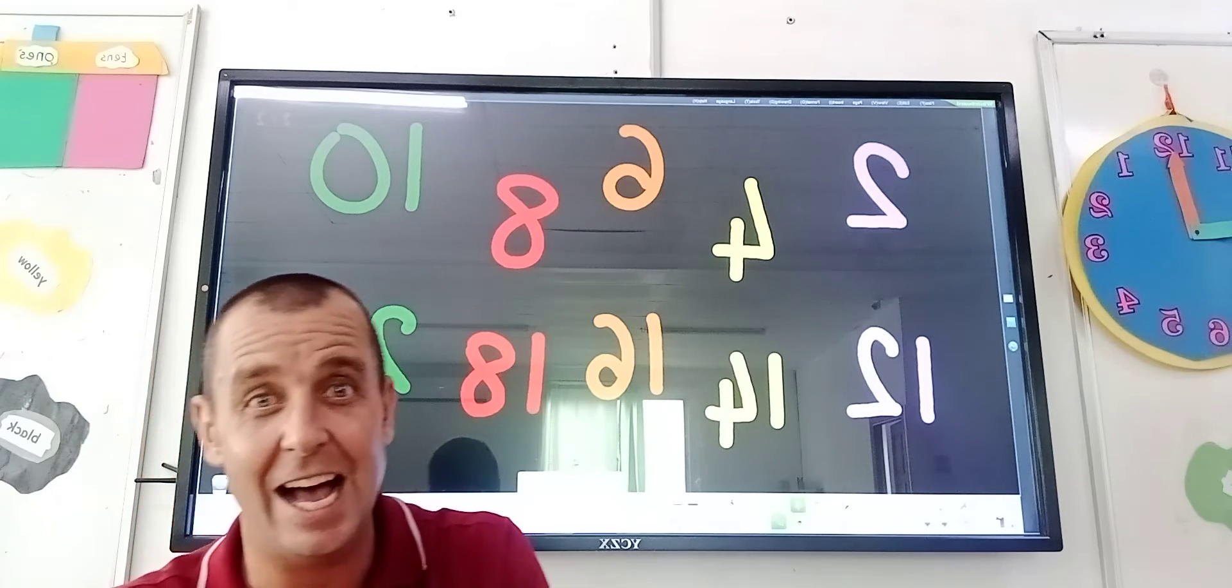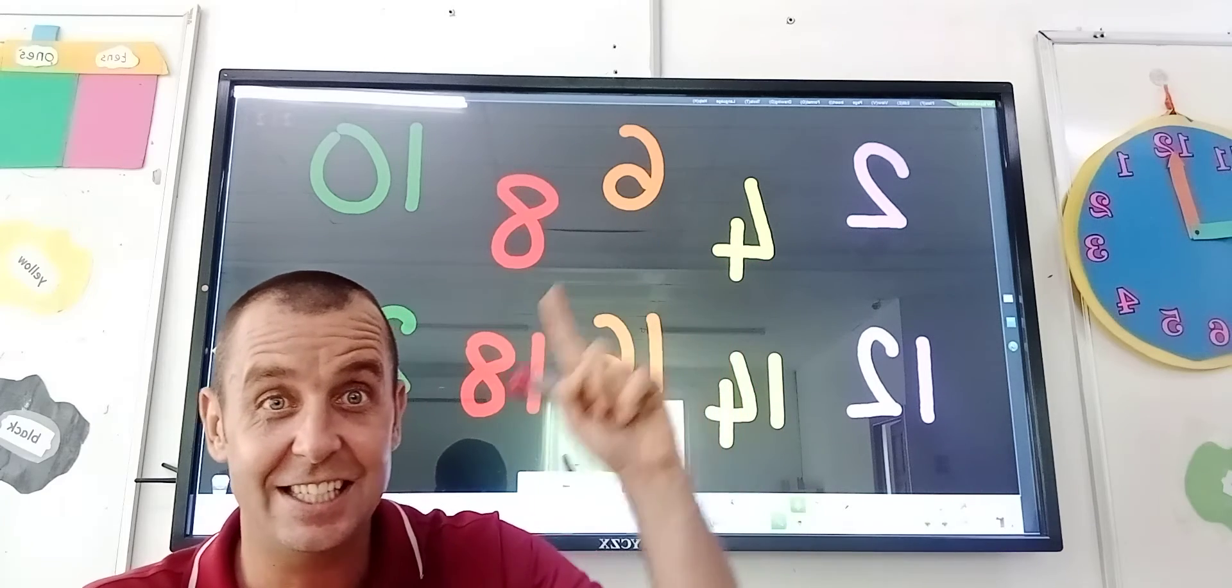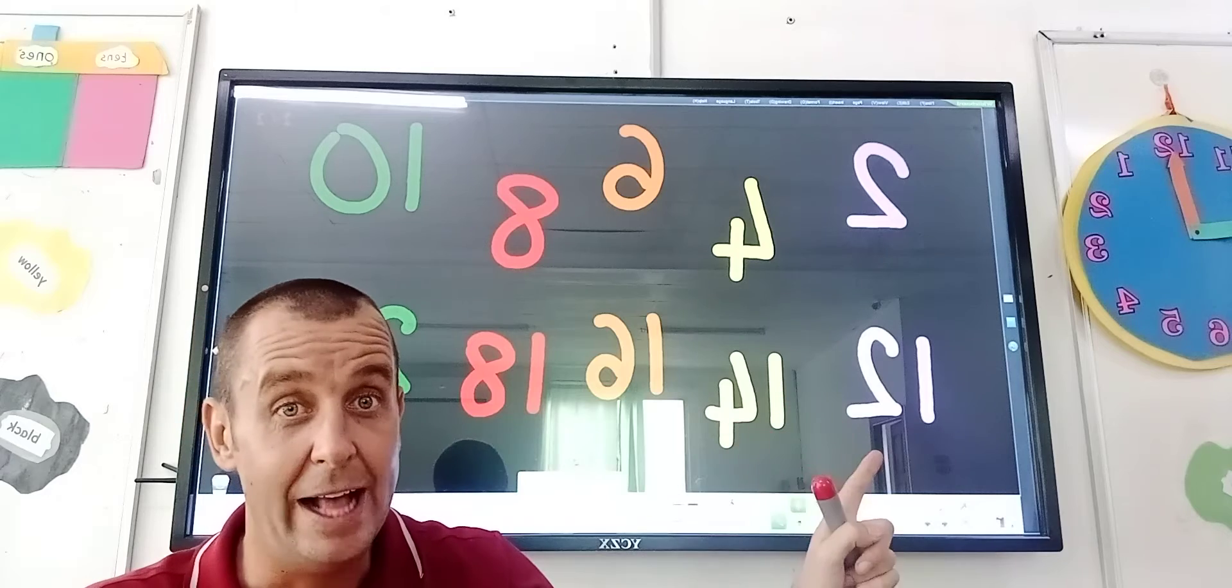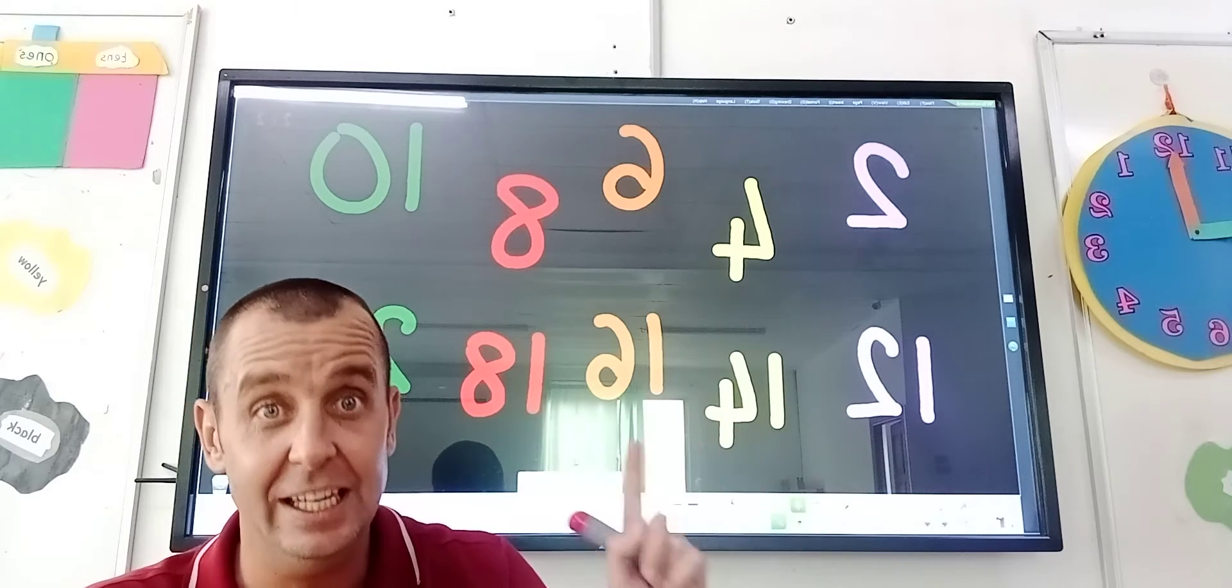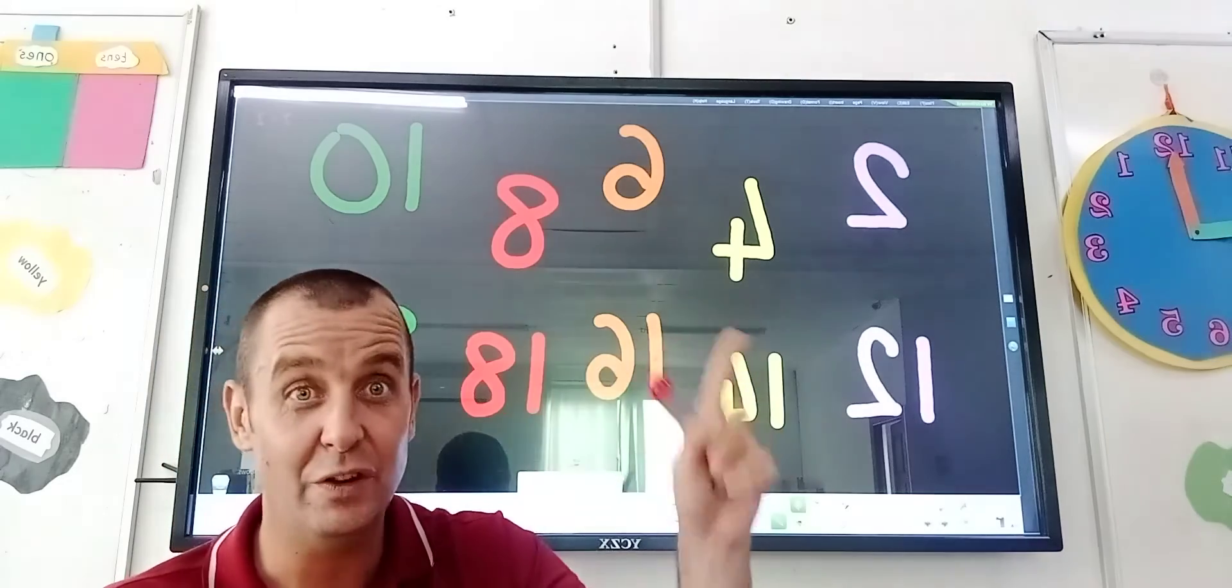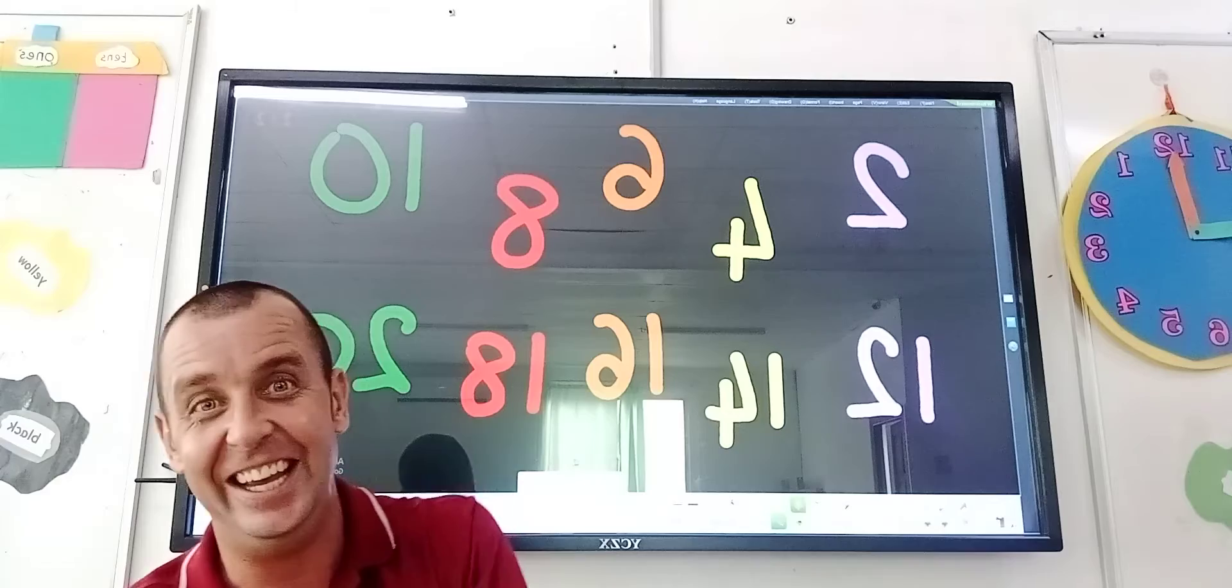We're going to do it one more time. 2, 4, 6, 8, 10, 12, 14, 16, 18, 20. And then really fast: 2, 4, 6, 8, 10, 12, 14, 16, 18, 20.